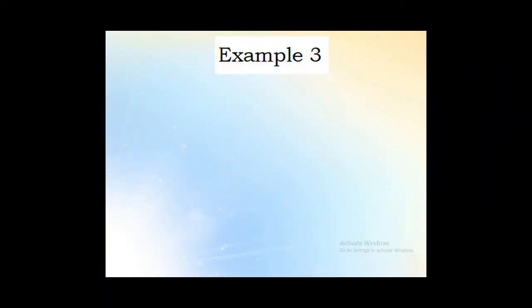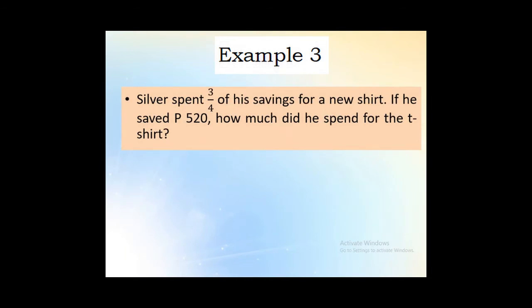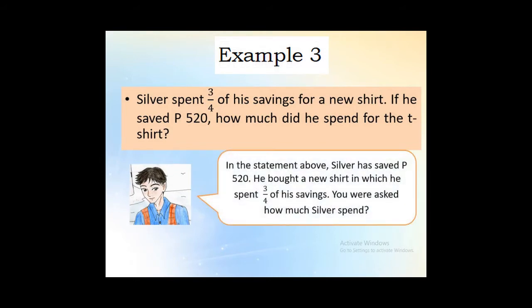Example number 3: Silver spent three-fourths of his savings for a new shirt. If he saved 520 pesos, how much did he spend for the t-shirt? In the statement above, Silver has saved 520 pesos. He bought a new shirt in which he spent three-fourths of his savings. So you were asked how much Silver spent.